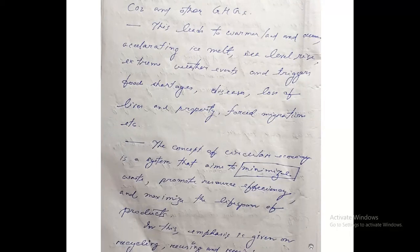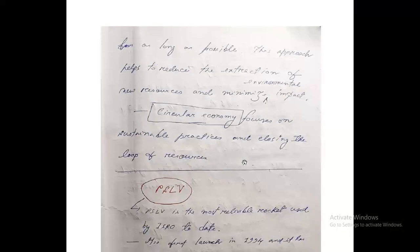The concept of circular economy is a system that aims to minimize waste, promote resource efficiency, and maximize the lifespan of products. This approach helps reduce the extraction of new resources, minimize environmental impact, and focuses on sustainable practices by closing the loop of resources.